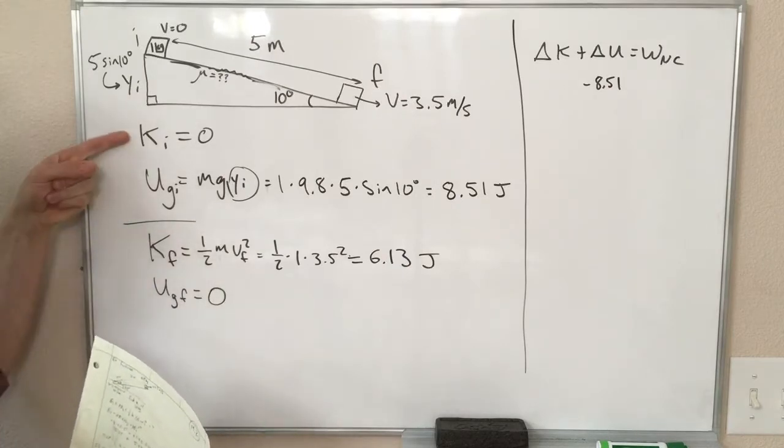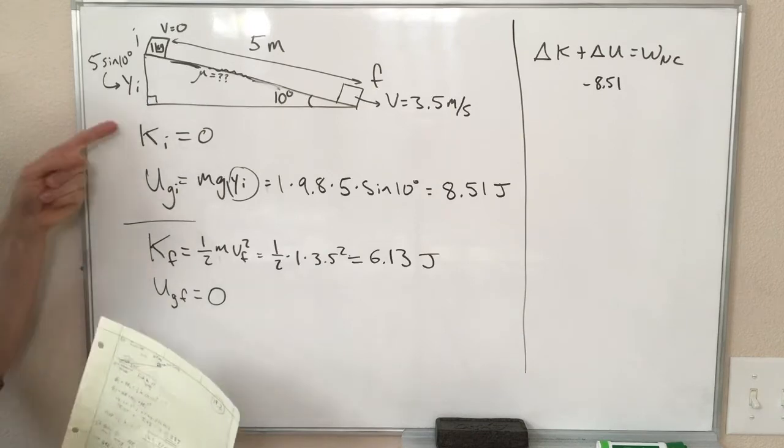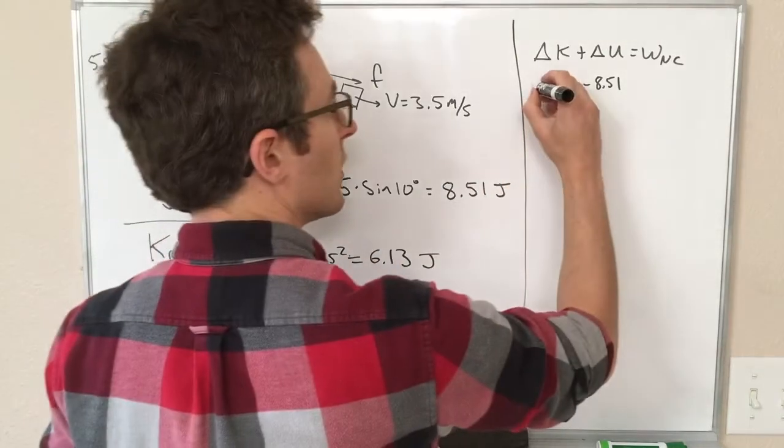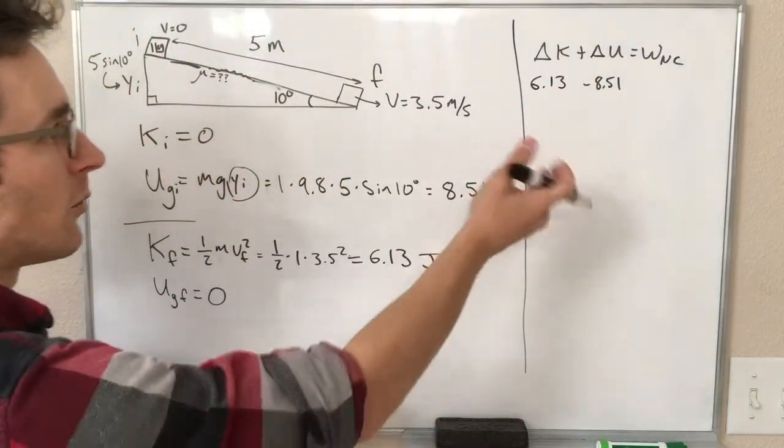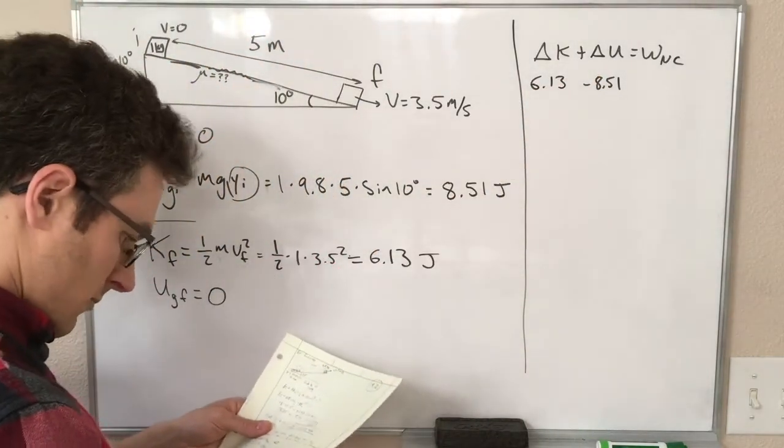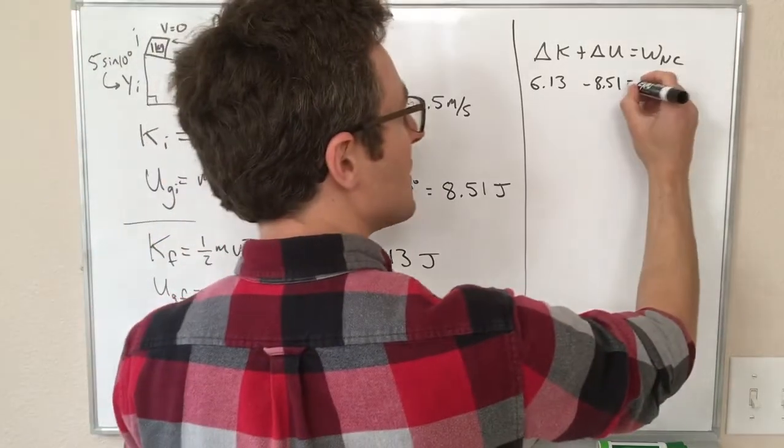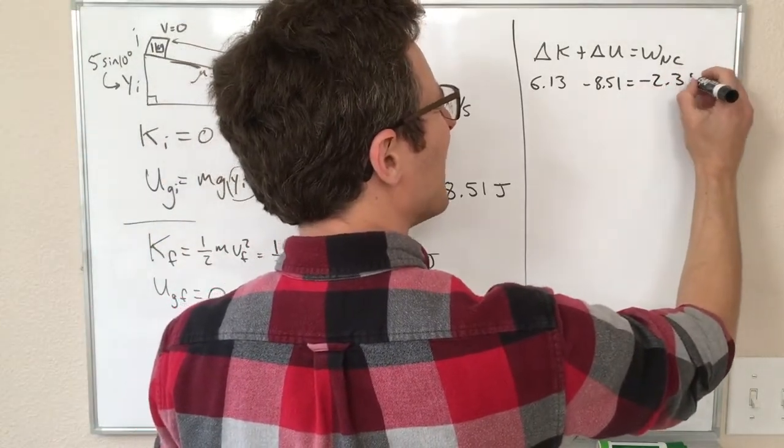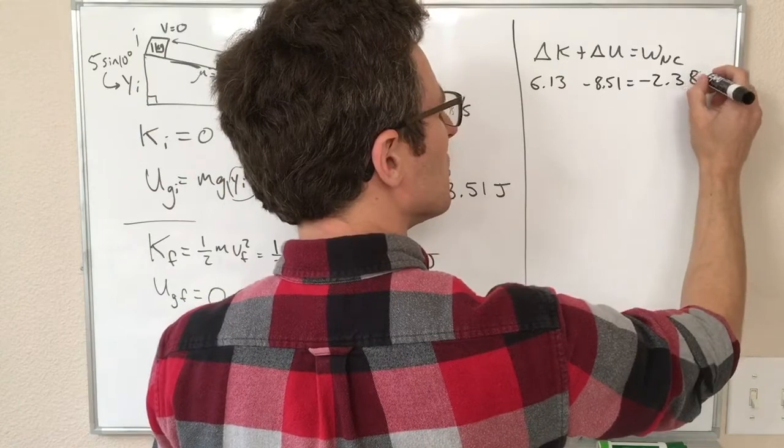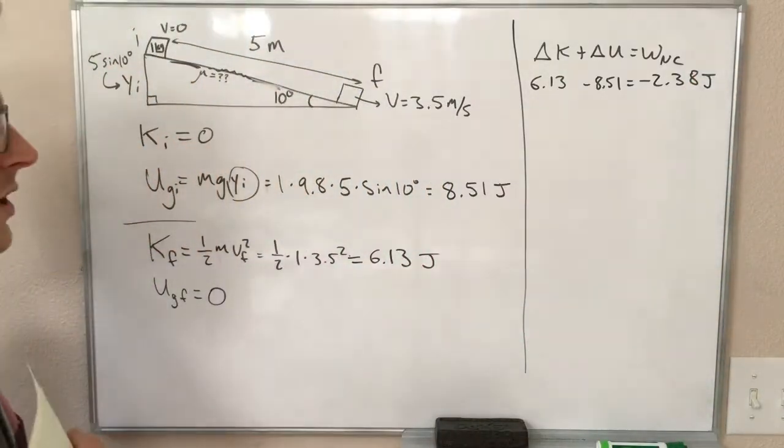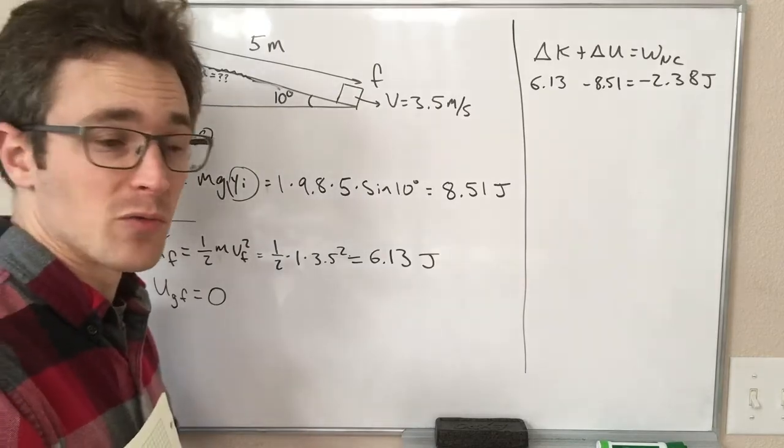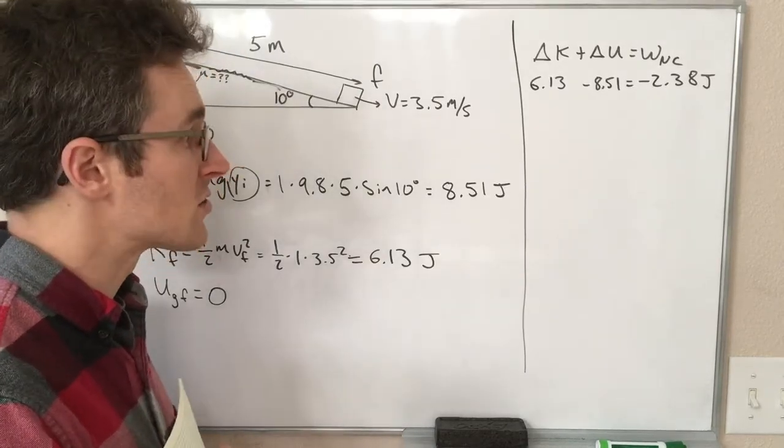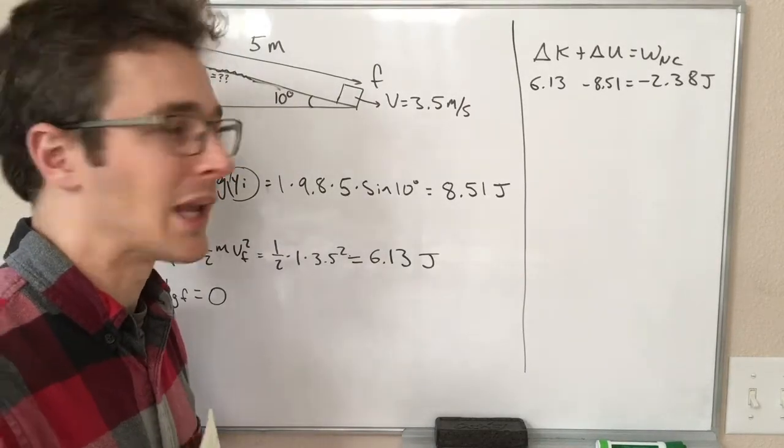The kinetic energy starts at 0 and ends at 6.13. 6.13 minus 0 is 6.13, so we have a positive change in our kinetic energy, and when we subtract those, we get minus 2.38 joules of work done by non-conservative forces, or in this case, 2.38 joules of energy lost from our mechanical system.